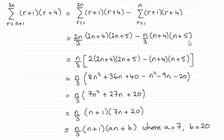So it's a question now of just simplifying this. Because we had to have n/3 out the front, I've taken n/3 out the front, and that means we get 2(2n+4)(2n+5), and then just minus (n+4)(n+5).